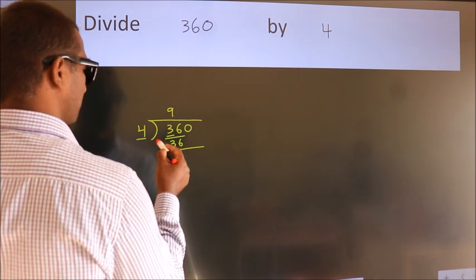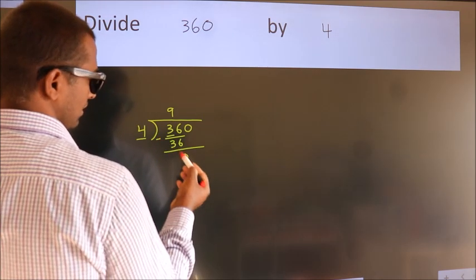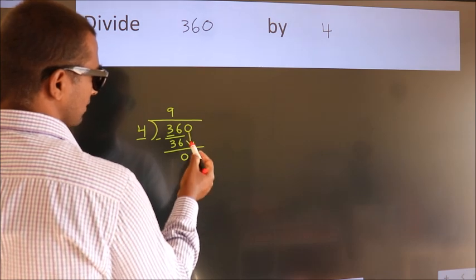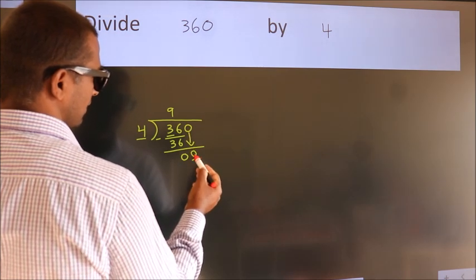Now we should subtract. We get 0. After this, bring down the beside number, so 0 down. So 0.